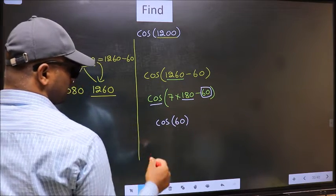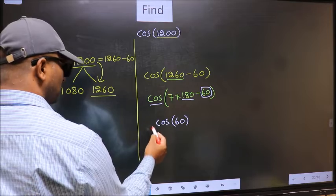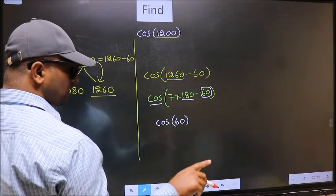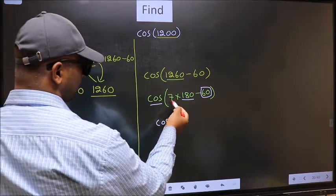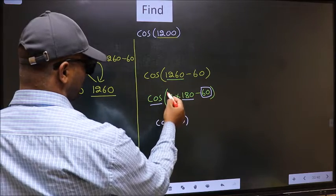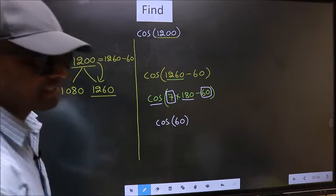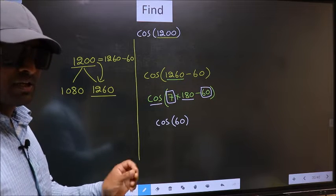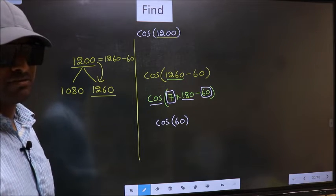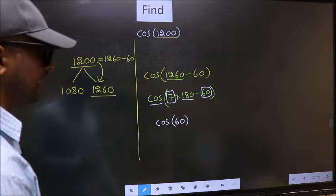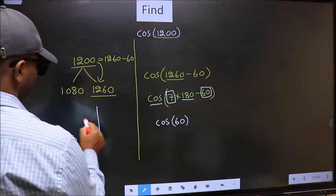Now the question is, will we get here plus or minus? To answer that, we should look at the number before 180—that is 7. And 7 is odd, and all the odd multiples of 180 lie in either the second or the third quadrant.